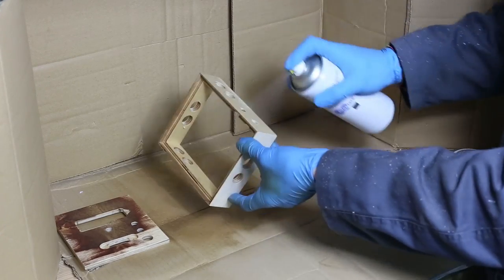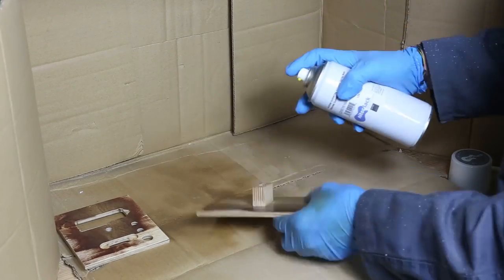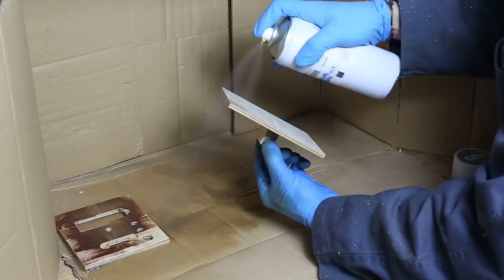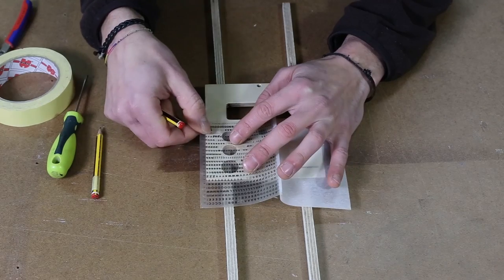We can apply now the varnish, three coats of lacquer in my case. And between them you can use transfer paper to write the names of the buttons.